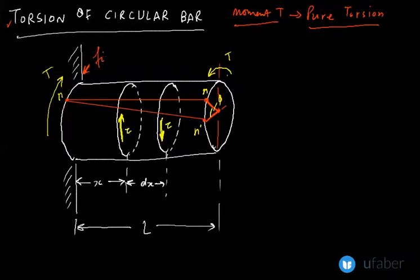Let us assume the left end of the circular bar is fixed. Before we go into further calculations, there are some important considerations to observe for this analysis. The first consideration is that the cross-section of the bar remains plain and circular during rotation.